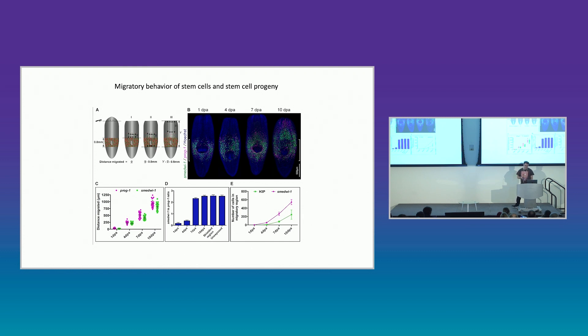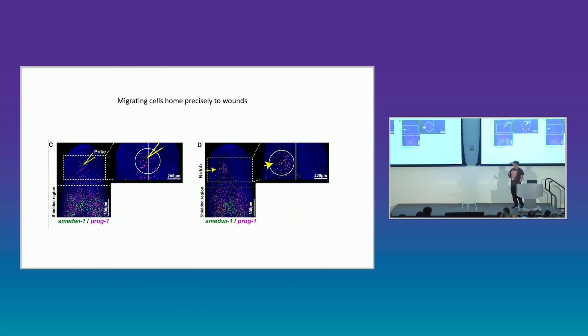So these cells will just stay here until you make a wound at the anterior or posterior, and then they migrate towards that wound. And we can measure the kinetics of that migration very accurately. We can show the migration really is very accurate because we can put a poke in the animal in the midline, or a poke to the side, or a little notch, and we can see the stem cells and their progeny migrate very accurately to this wound.